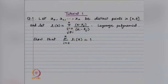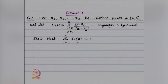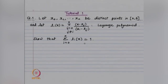Look at the problem: in the interval [a, b], we have n+1 points. Look at the Lagrange polynomial which is based on these n+1 points. The Lagrange polynomial has the property that l_i(x_j) = 1 if i = j, and 0 if i ≠ j. We want to show that the summation of l_i(x) for i = 0 to n equals 1.